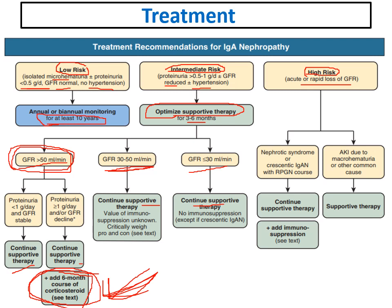If the AKI is due to macroscopic hematuria or other common causes, supportive therapy only is indicated. The key conditions for giving steroids in intermediate-risk patients are: six months of supportive therapy given first, persistent proteinuria more than one gram, GFR declining but still more than 50 mL/min. This algorithm is very practical and illustrative for the management of IgA nephropathy.